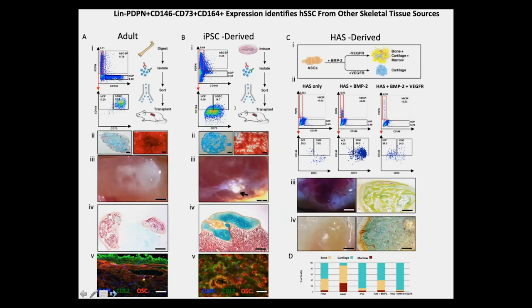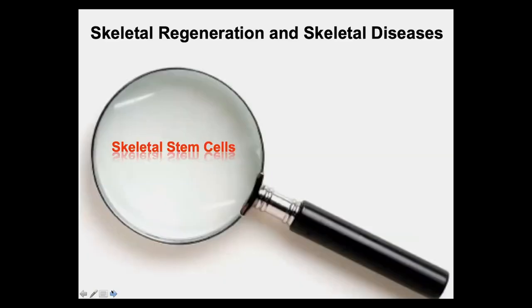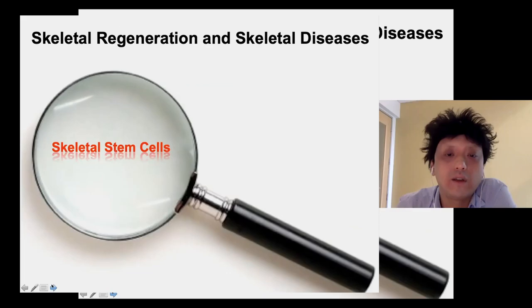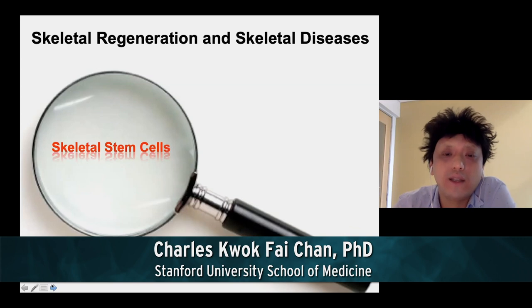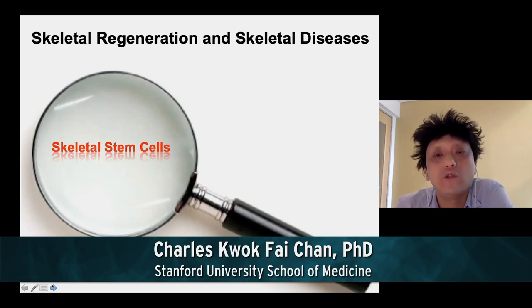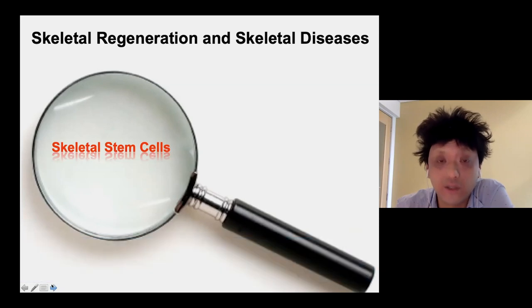This panel of markers allows us to isolate skeletal stem cells not only from fetal tissue, but also from adult bone marrow, skeletal stem cells derived from induced pluripotent stem cells, and ectopic bones formed under the influence of the strong morphogen BMP2. Now that we have identified the skeletal stem cells, we can see whether it gives us new insight into skeletal disease — for instance, can we apply this skeletal stem cell lens to bone regeneration?